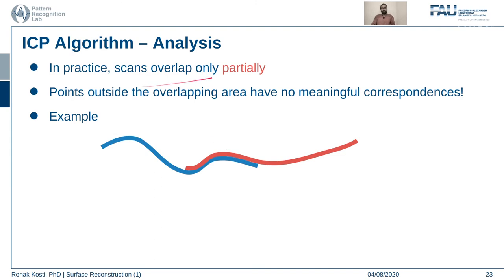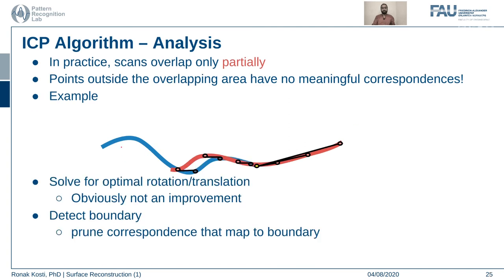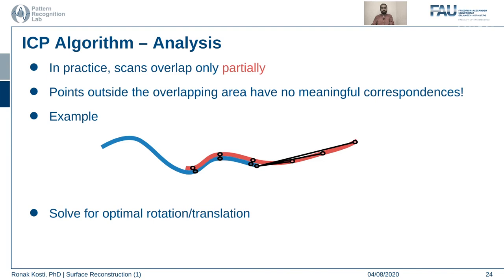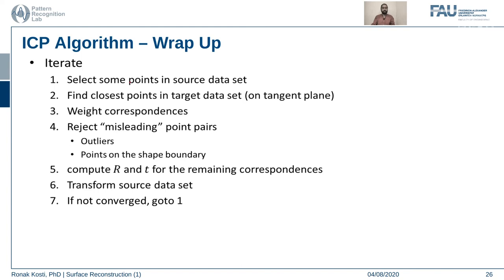Another practical problem is that scans overlap only partially, because they are taken from different camera angles. Finding correspondences requires matching or overlapping points meaningfully. If two curves with completely different curvatures are nearby, the iterative algorithm will try to match them incorrectly, causing a worse result than the previous alignment. These are the practical problems we can face while doing 3D matching.